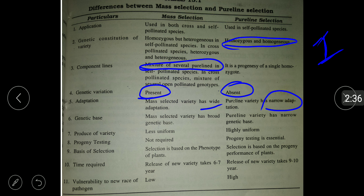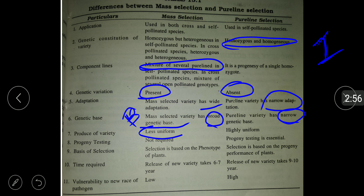In terms of genetic base, mass selected varieties have a broad genetic base, while pure line varieties have a narrow genetic base due to their homozygous and homogeneous nature. Mass selected varieties produce less uniform output, whereas pure line selections have a highly uniform nature.